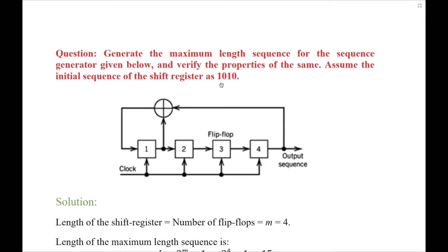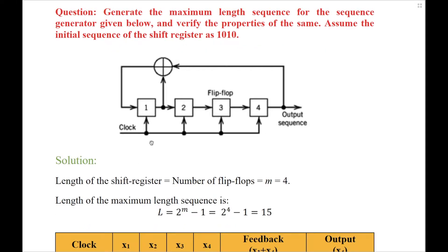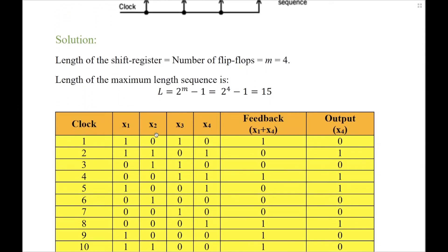In our question, we are given the initial content of the shift register as 1010. You can take any sequence here, but all zeros should never be considered as the initial content. What happens in the maximum length sequence generator is that at every clock input, the contents of the shift register are shifted to the right. Therefore, the content of flip-flop 1 moves to 2, flip-flop 2 moves to 3, flip-flop 3 moves to 4, and the contents of flip-flop 4 are generated as the output sequence. This is what we have shown here.